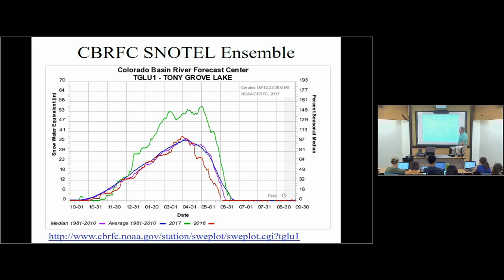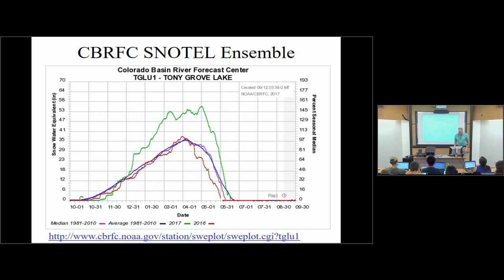These are graphs of how snow water equivalent builds up and then ablates later in the season — sort of a hydrograph of snow water equivalent on the ground. This is one of the snow stations up Logan Canyon, the Tony Grove Lake Station. You'll see that 2017 was the really high year, shown by the green line. 2016 is the red, which was a low year. The average is the blue and the purple, for mean or median. This is kind of like flooding in the mountains, you could say — the green lines.